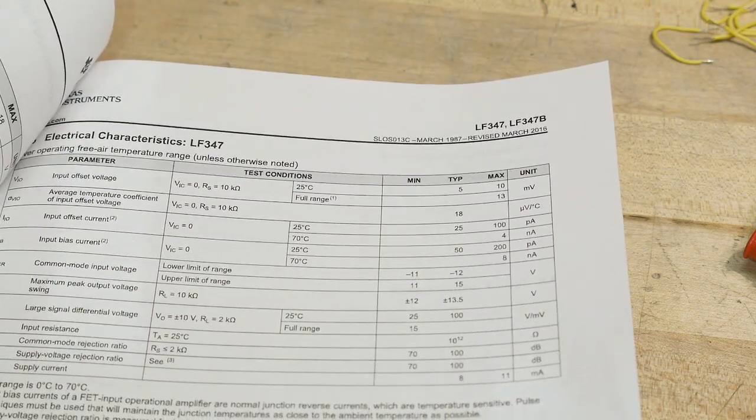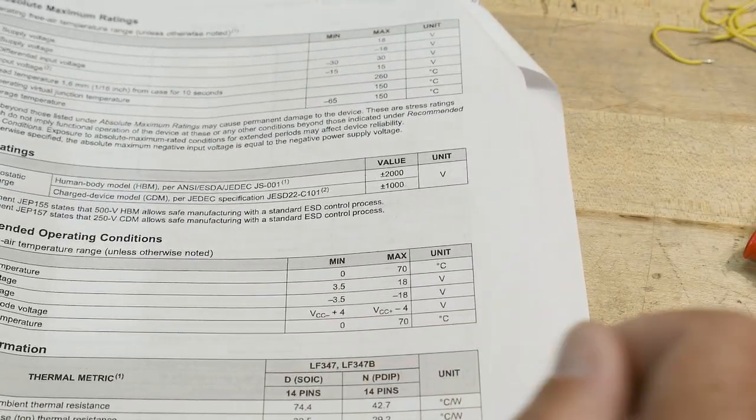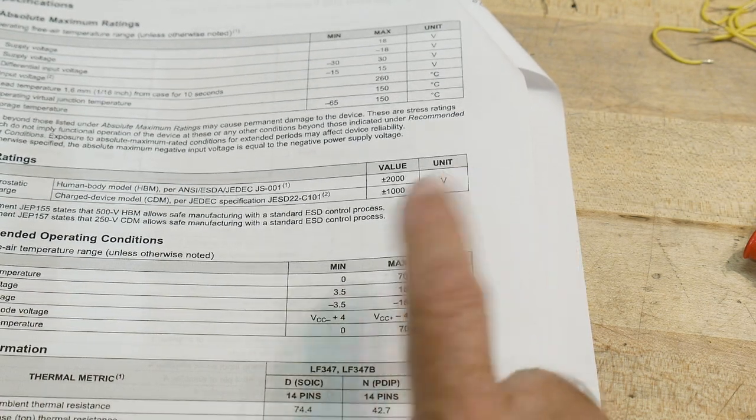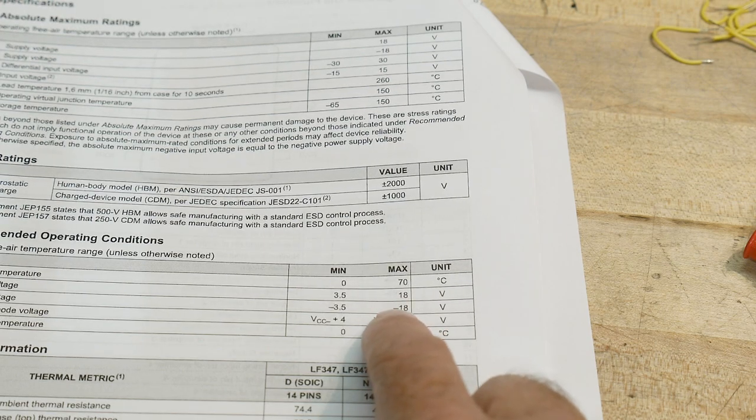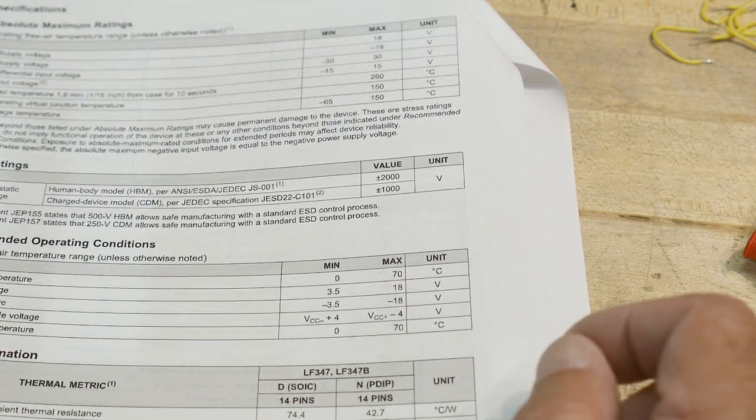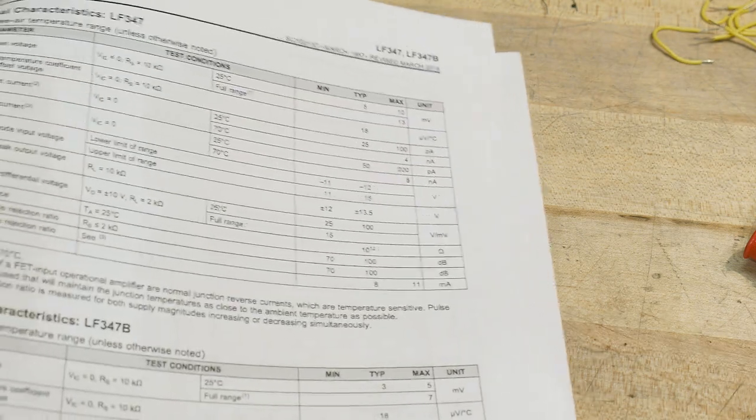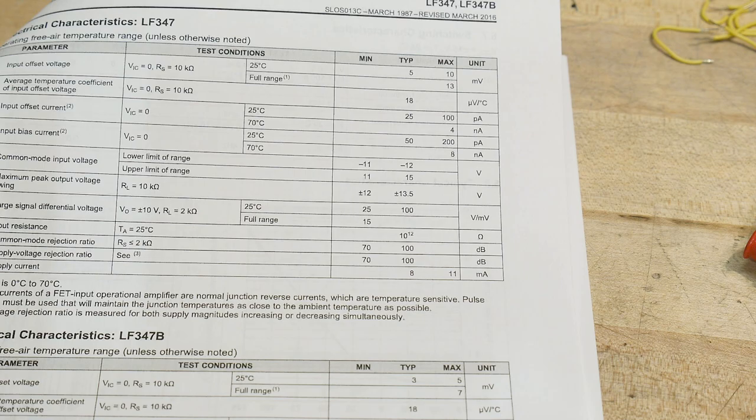Let's take a look at the voltage conditions here. This one is good, recommended operating voltage supply voltage is 18, so plus or minus 18 volts and zero to 70 degrees C, that's a pretty good range.